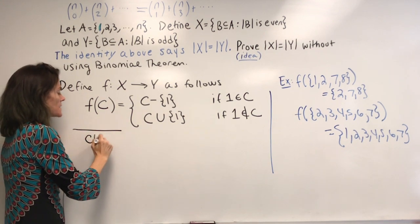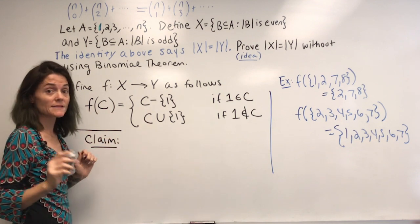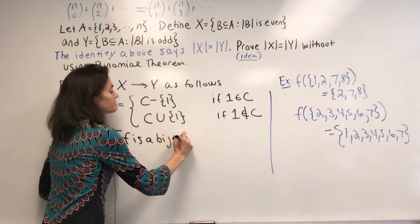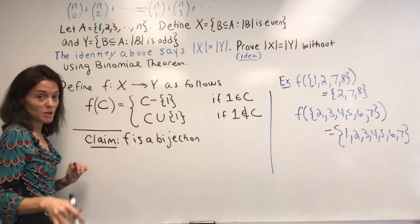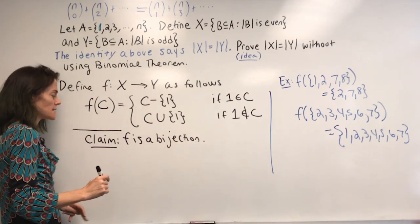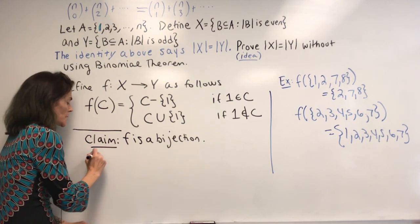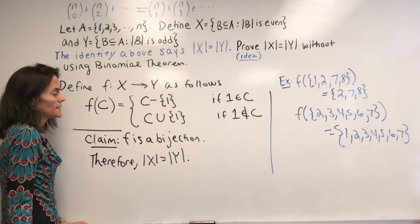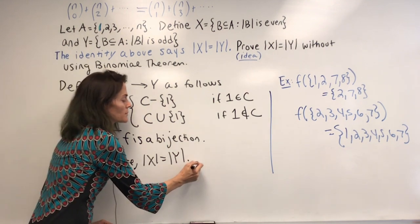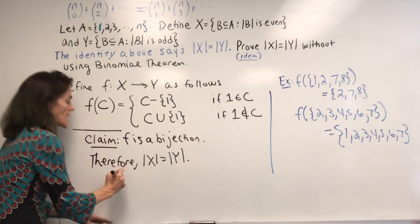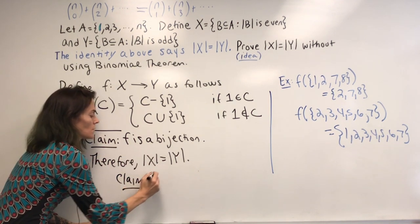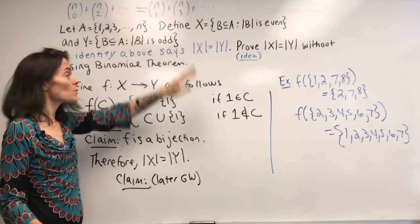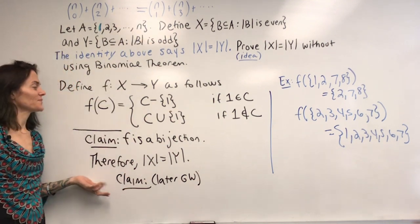The claim is that F is a bijection — that means it's one-to-one and onto — and we proved in class that if you have a bijection between two finite sets, immediately you know they have the same cardinality. This would be the argument; I'll leave verifying F is a bijection to group work. But this is how we could prove this identity without using the binomial theorem at all, using this map.